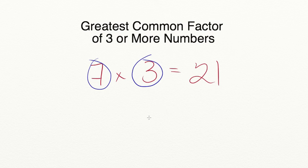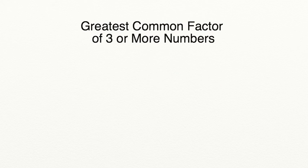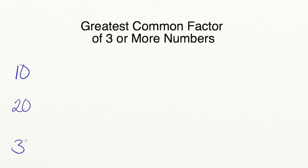When we're trying to find the greatest common factor of three or more numbers, the first thing we need to do is list out all of the factors for each of the numbers we're trying to compare. Let's go ahead and start with an example. I want to find the greatest common factor of 10, 20, and 30.